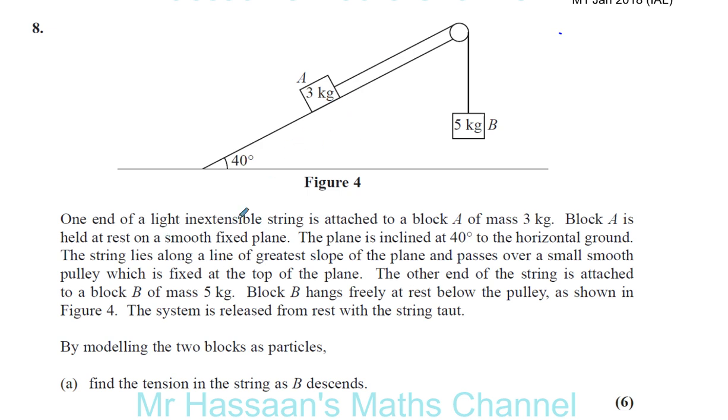The plane is inclined at 40 degrees to the horizontal ground. The string lies along a line of greatest slope of the plane and passes over a small smooth pulley which is fixed at the top of the plane. It's basically just one plane. The other end of the string is attached to a block B of mass 5 kilograms. Block B hangs free at rest below the pulley as shown in figure 4. The system is released from rest with the string taut. By modeling the two blocks as particles, find the tension in the string as B descends.